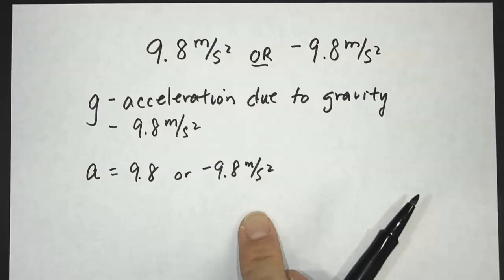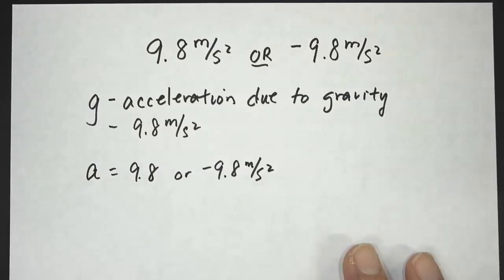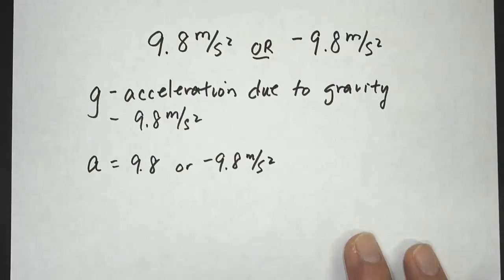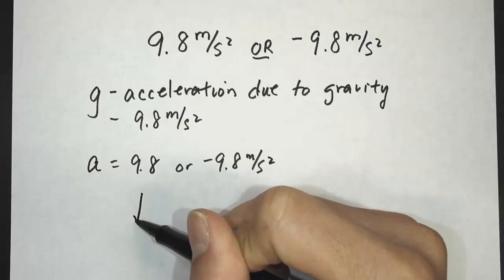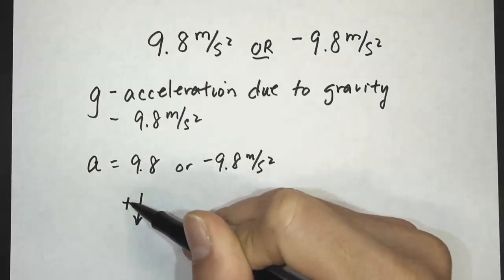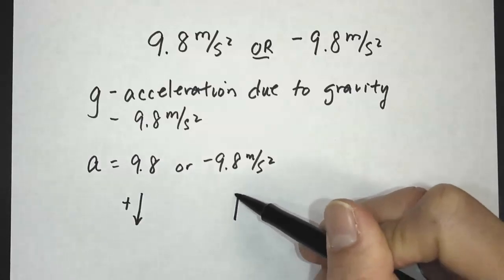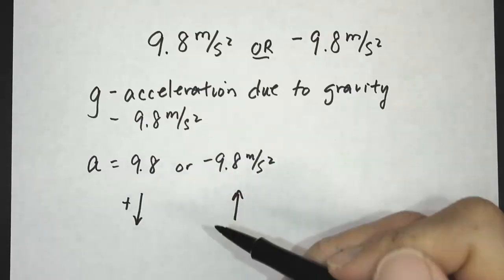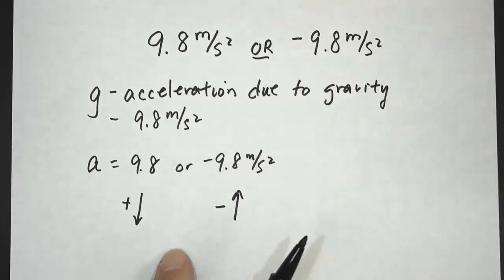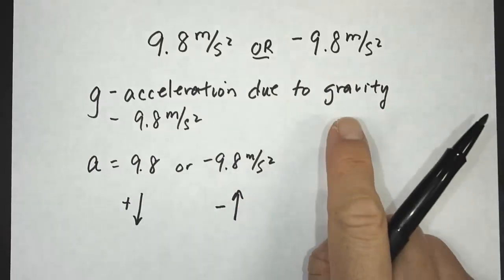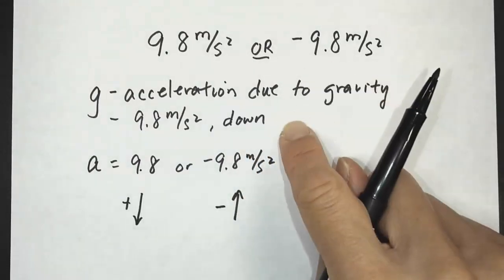The answer depends on your positive direction — what direction are you defining as positive? If you define down as positive, your acceleration would be 9.8. If you define up as positive, your acceleration will be negative 9.8. The reason for this is because the acceleration due to gravity is in the down direction.